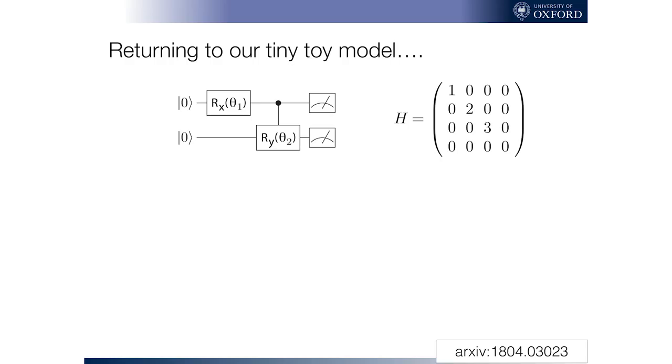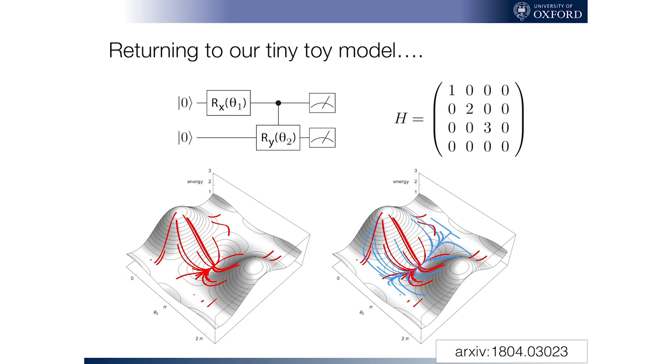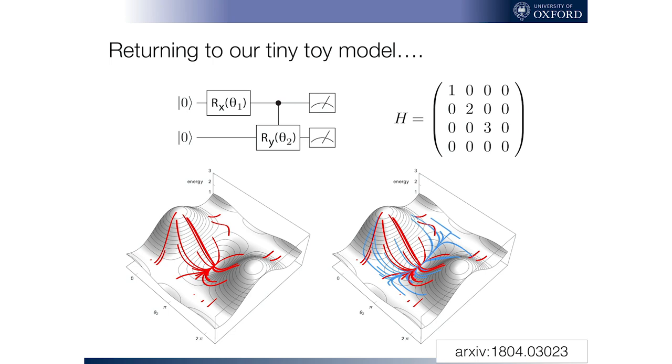And let's see how that acts on our toy problem. Well, it fixes it. Instead of getting stuck in this zero gradient, it no longer just cares about the gradient, we can actually find our way downhill to the true minimum.